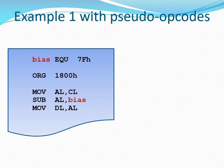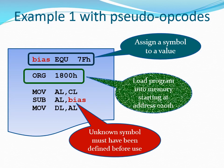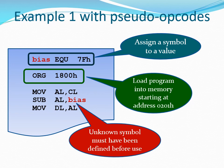Here is an example to illustrate the use of pseudo opcodes in a program. The first statement uses the equate pseudo opcode to assign a symbol to a value — in this case, it assigns the symbol BIAS to the value 7FH. This means that every time we encounter the word BIAS, it represents the value 7FH. The equate statement is used to represent values using more readable and understandable symbols like BIAS, making the program more readable and easier to follow.